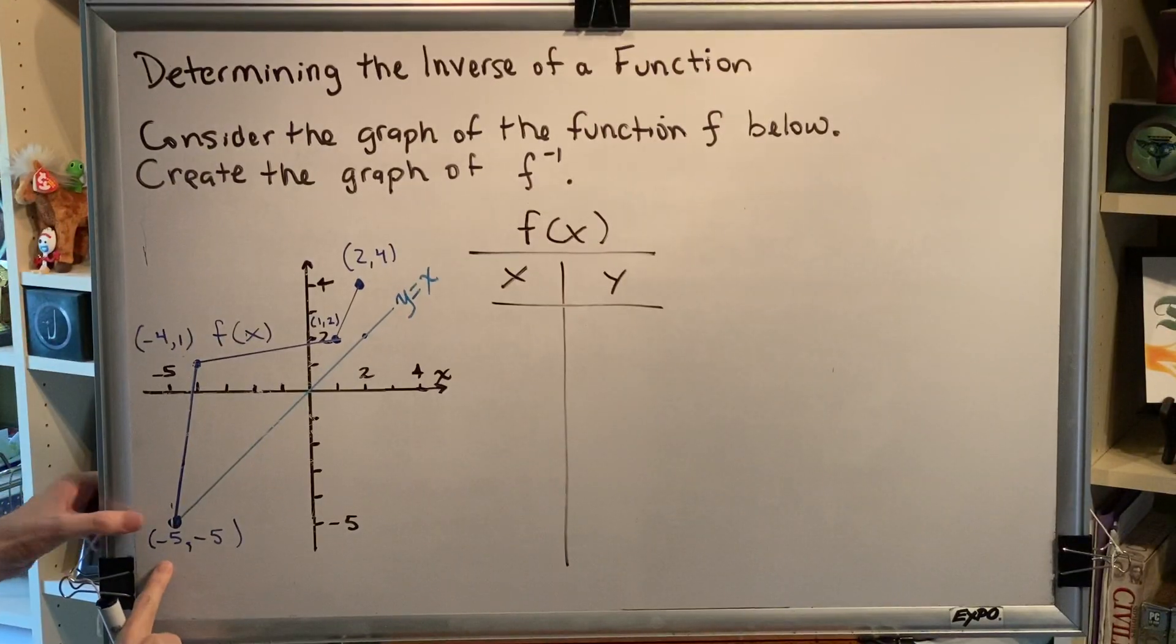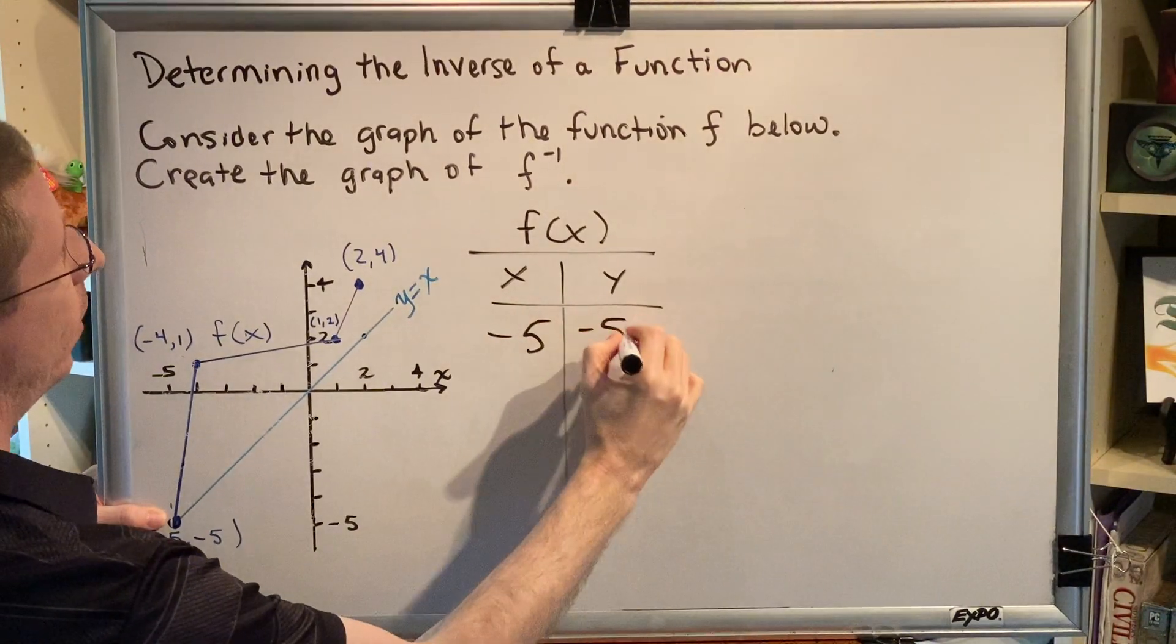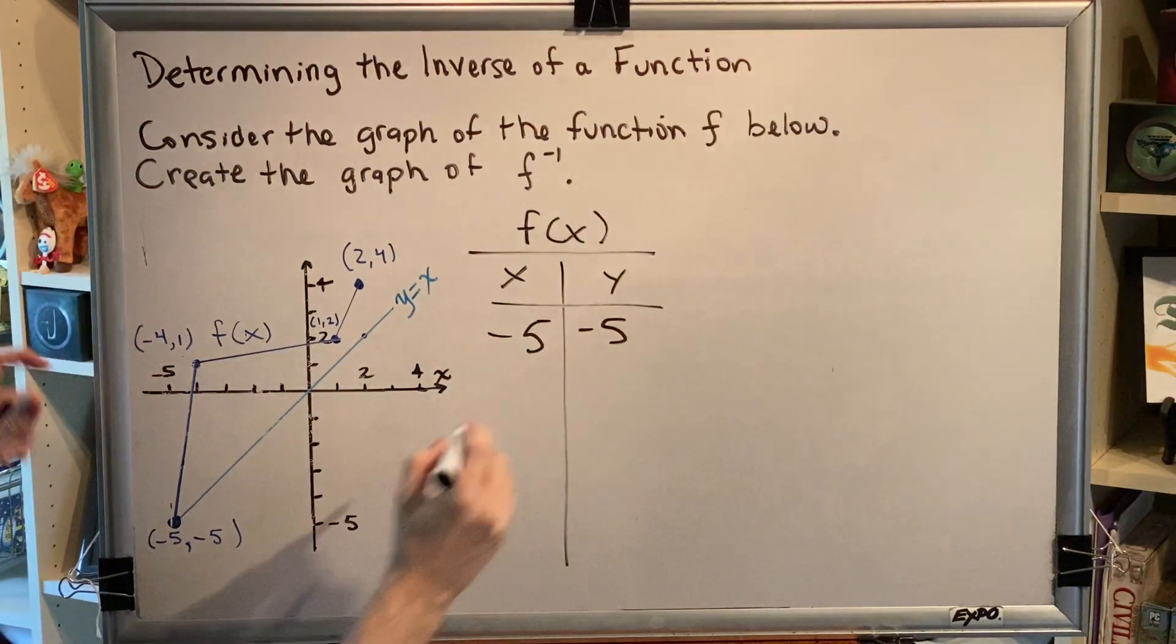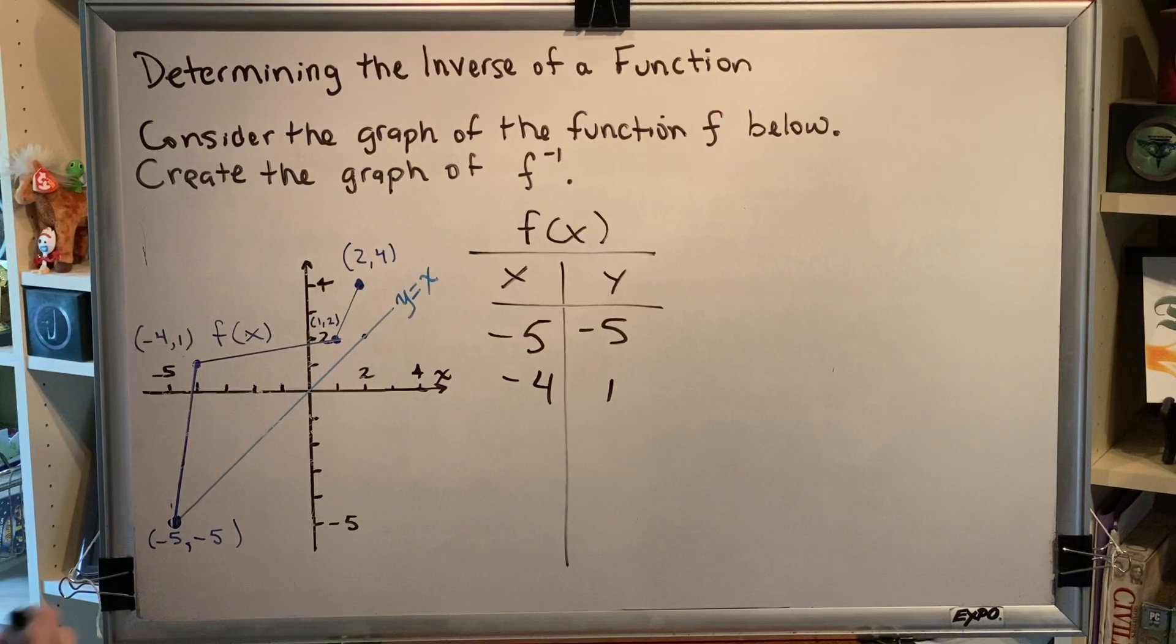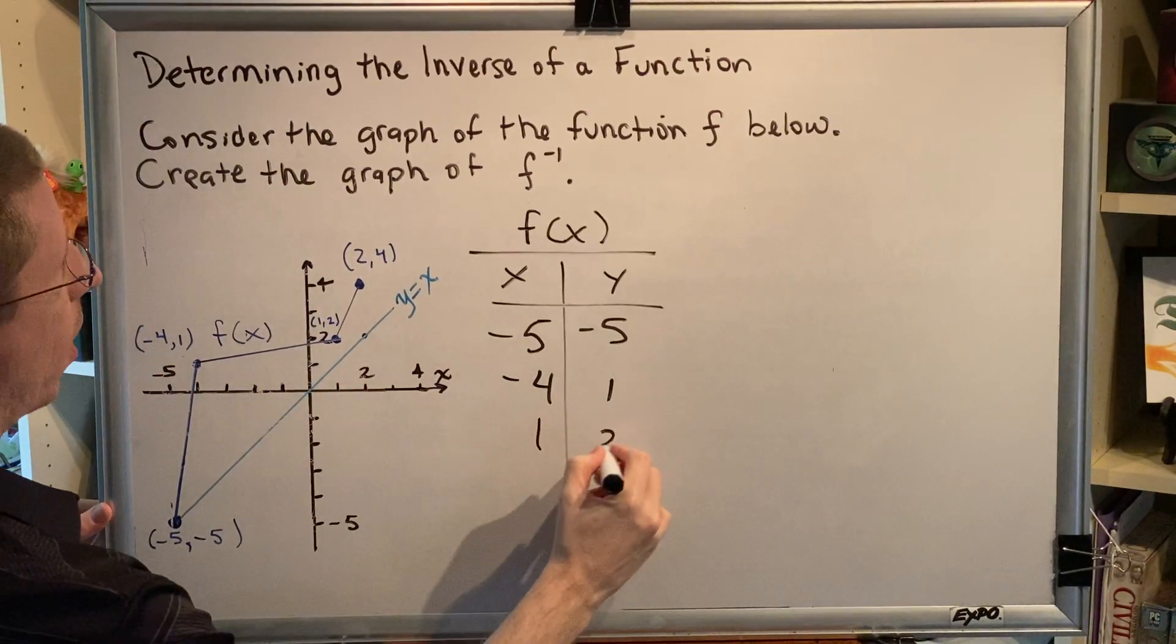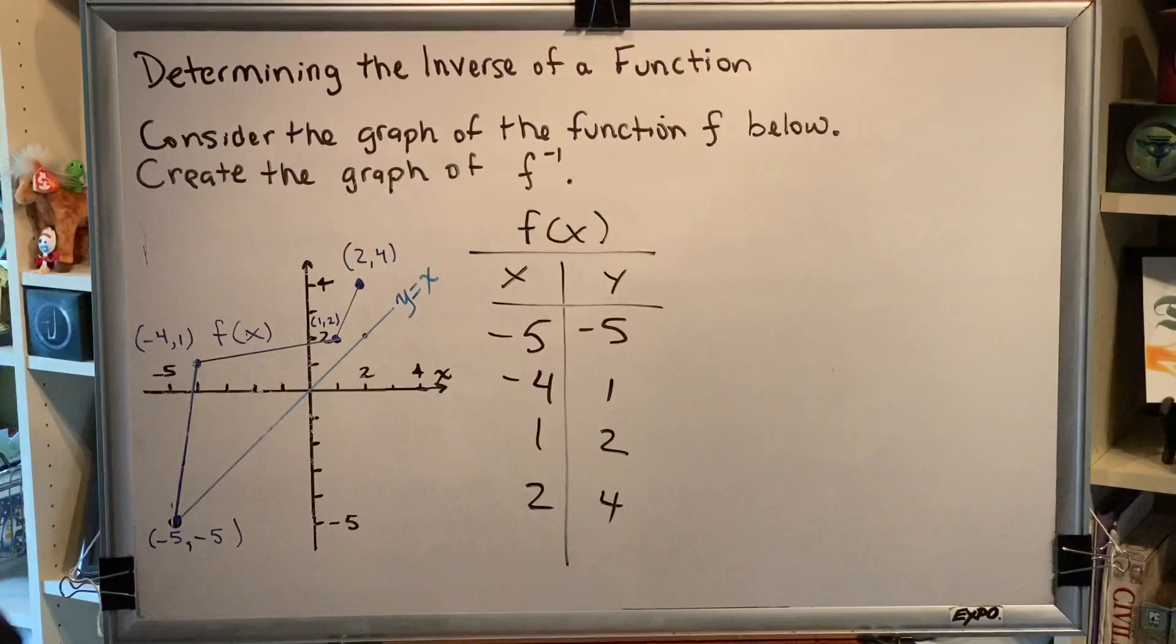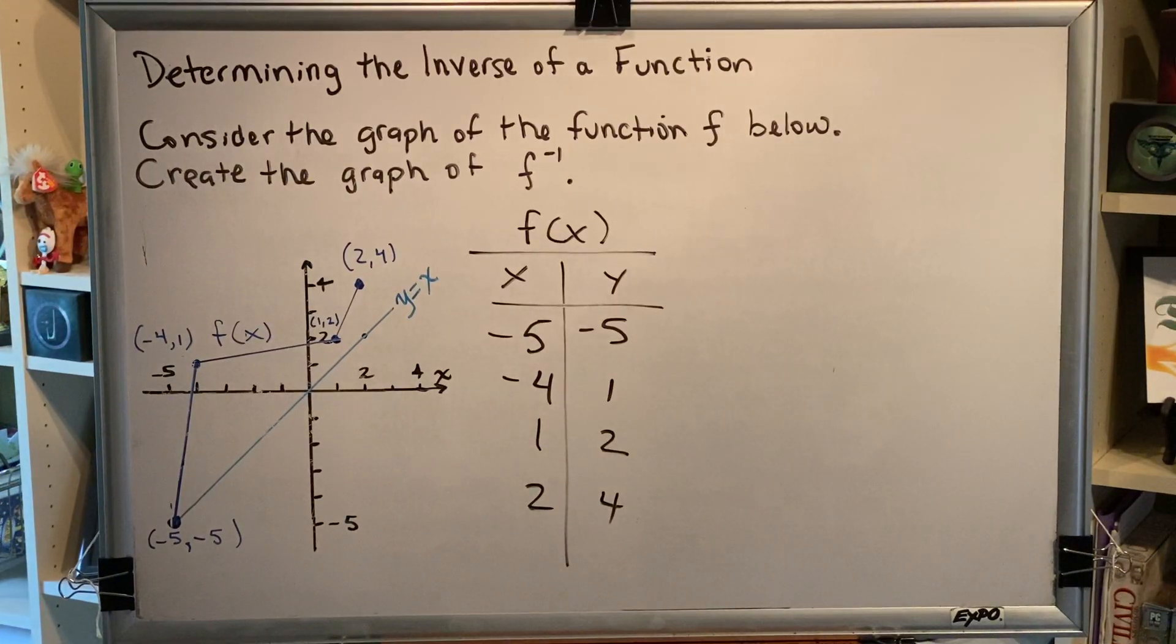For example, we know that this point, negative 5, negative 5, is on f of x. This point, negative 4, positive 1, is on the graph of f of x. This point, 1 comma 2, and this point, 2 comma 4, comprise all of the endpoints of the line segments on the graph of f of x.